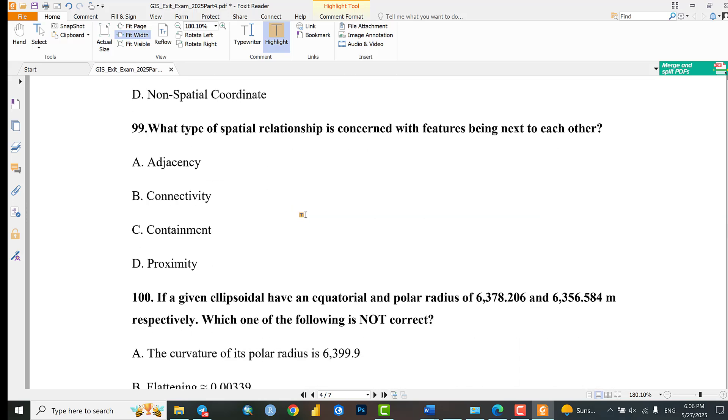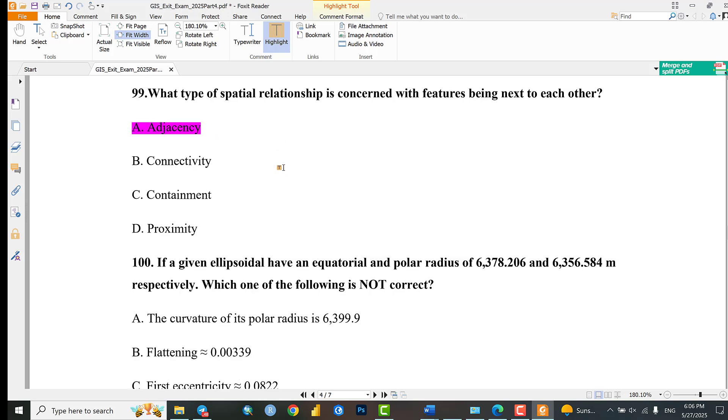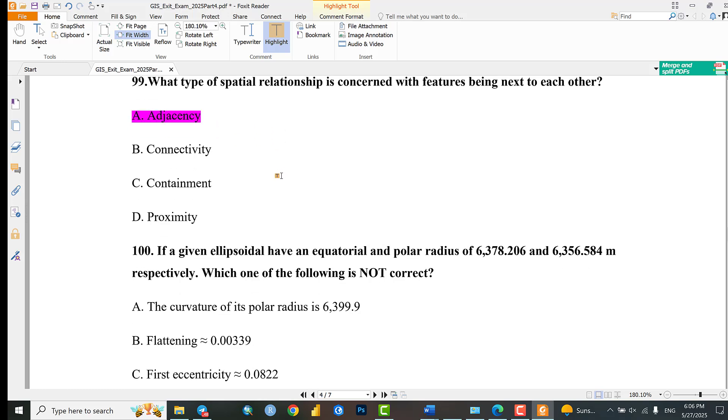Question 99: What type of spatial relationship is concerned with features being next to each other? A: Adjacency, B: Connectivity, C: Containment, D: Proximity. The correct answer is A: Adjacency or neighborhood.